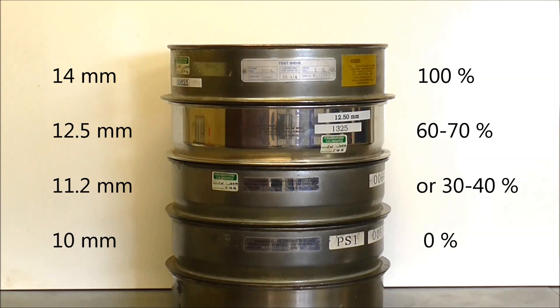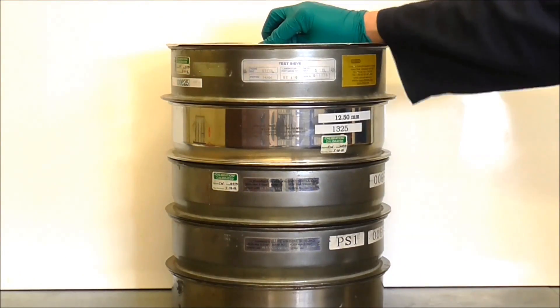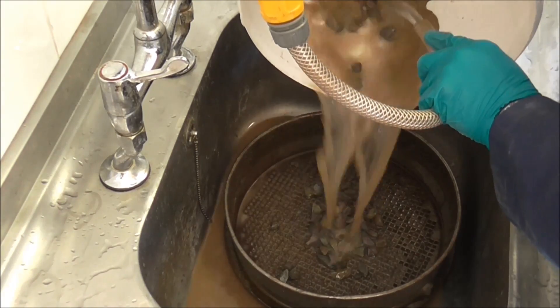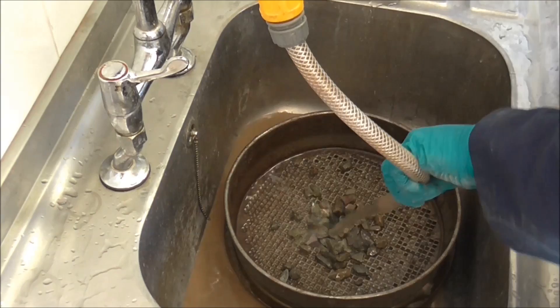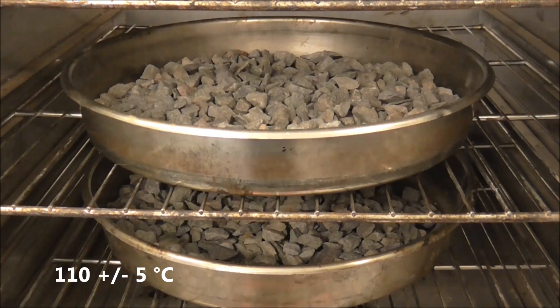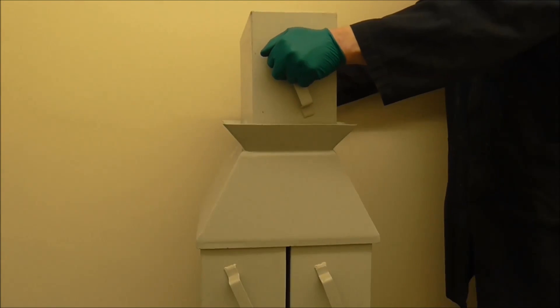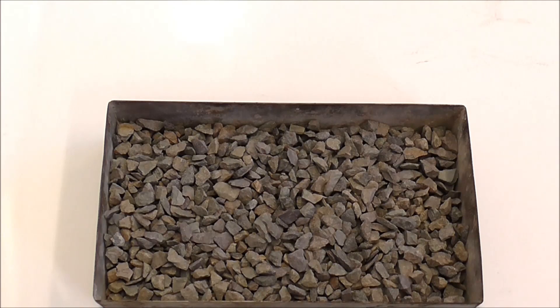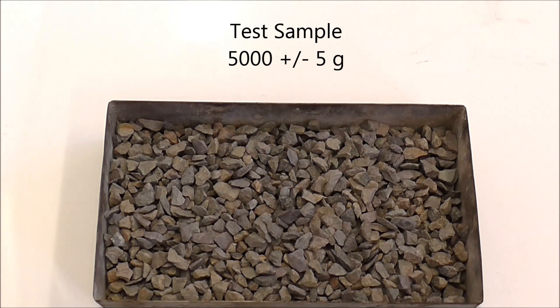The sample must be reduced to create two sized fractions by using just one of the intermediate sieves. The two sized fractions are then washed thoroughly to remove dust, after which they are placed in an oven set to 110 degrees Celsius and dried to constant mass. When cool, the two fractions are mixed together and then riffled down to create a test sample with a mass of 5000 plus or minus 5 grams.